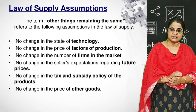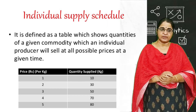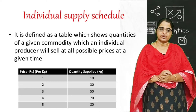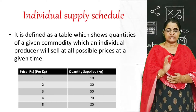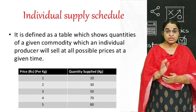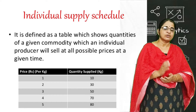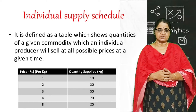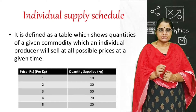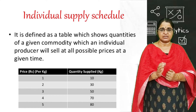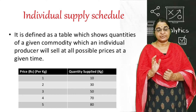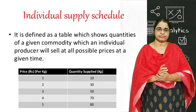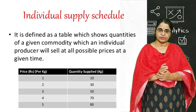Individual supply schedule is the table showing the different quantities of a commodity or services that a producer is willing to sell at different prices at a given period of time.